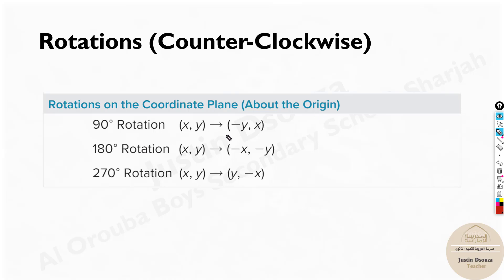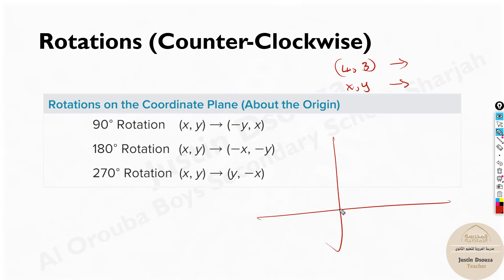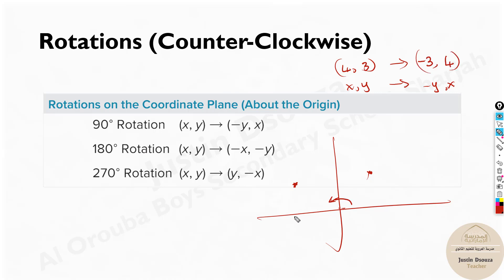For 90 degrees, these are very important formulas. Imagine you have the coordinates (4, 3) and you're rotating this point 90 degrees about the origin. The formula gives you (-y, x) — so the y-value comes first as a negative, and the x-value follows. For (4, 3), that gives you (-3, 4). That's how we get the rotated point.